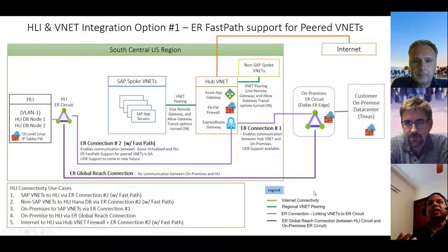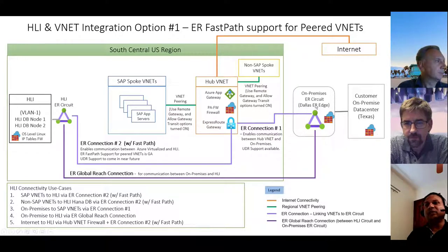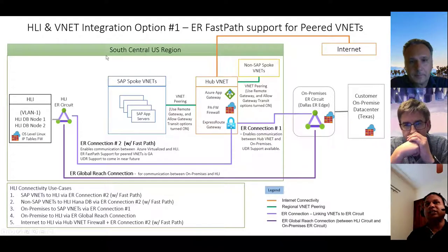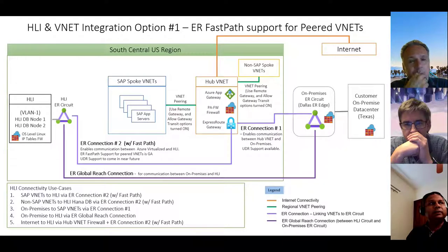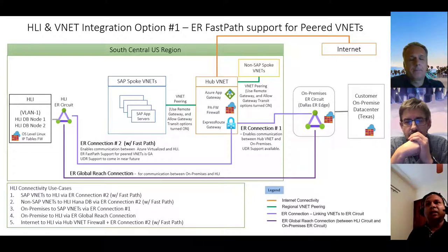Building on the HLI networking slide: on the right is the customer on-premises data center, using a customer ExpressRoute circuit to connect into Azure — the South Central US region. The HLI is now located inside Azure data centers, not in Equinix Colo facilities. Originally HLI was deployed in Equinix Colo facilities, but as we progressed, HLI is now in our own Azure data centers, which significantly improves latency to the HLI server.